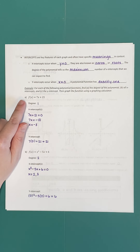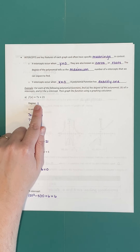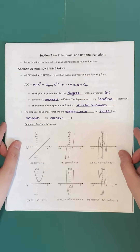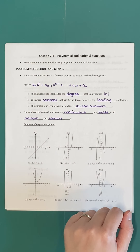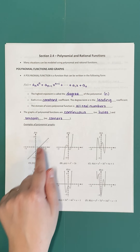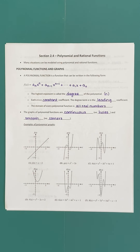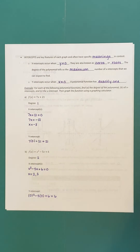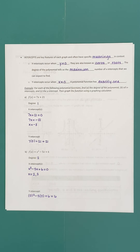We know this is polynomial because we have an x with an exponent of 1 — a whole positive number — with a coefficient, and a term without an x. The degree is always going to be the highest exponent attached to the input variable x. In this case, the only term with x doesn't have a written exponent, so the understood exponent is 1. This is a degree 1 polynomial. Because it's an odd degree, the tails are going to point in opposite directions, and the maximum number of x-intercepts is one.